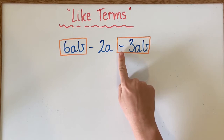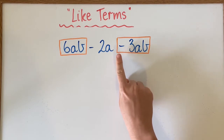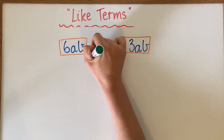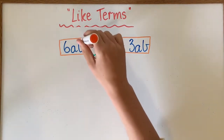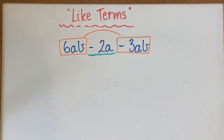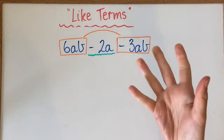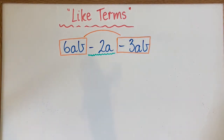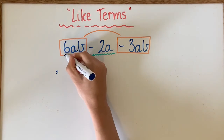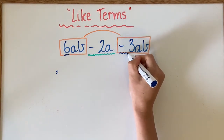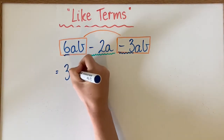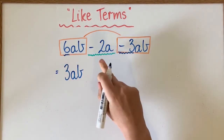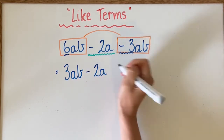You'll notice that I included the negative sign out the front. And then negative 2A is not alike — it's not like terms with the other two. So the AB terms are going to be combined, and the negative 2A is going to stay as is because it's got nothing to combine with. We've got a 6 and we're taking away 3, so 6 take away 3 is going to leave us with 3AB, and then we just put the negative 2A afterwards.